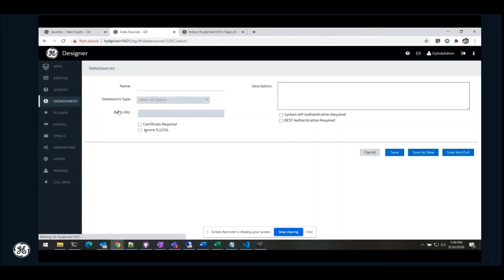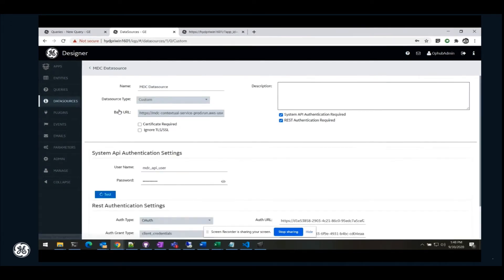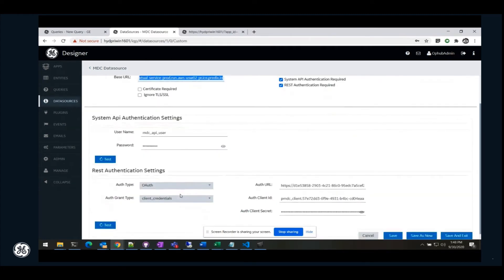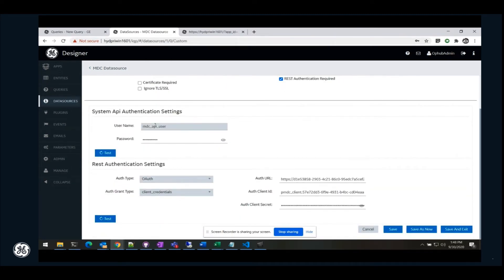We'll start by creating the data source. To create the data source, select custom type for REST APIs. Enter the authentication settings, username and password. Select the auth type as OAuth. Enter the client ID secret and then save.